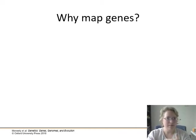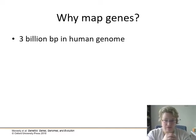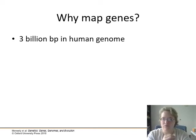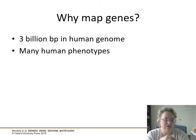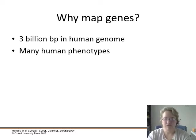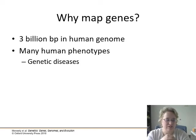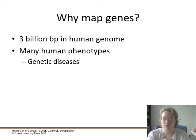So why map genes? We talked about linkage in chapter nine, but we've got three billion base pairs in the human genome, tens of thousands of different genes, and all the protein isoforms from alternative splicing — it's really complicated. We're still finding genes and discovering gene variants, especially for genetic diseases that are hereditary and may have ethnic or regional components tied to certain populations.